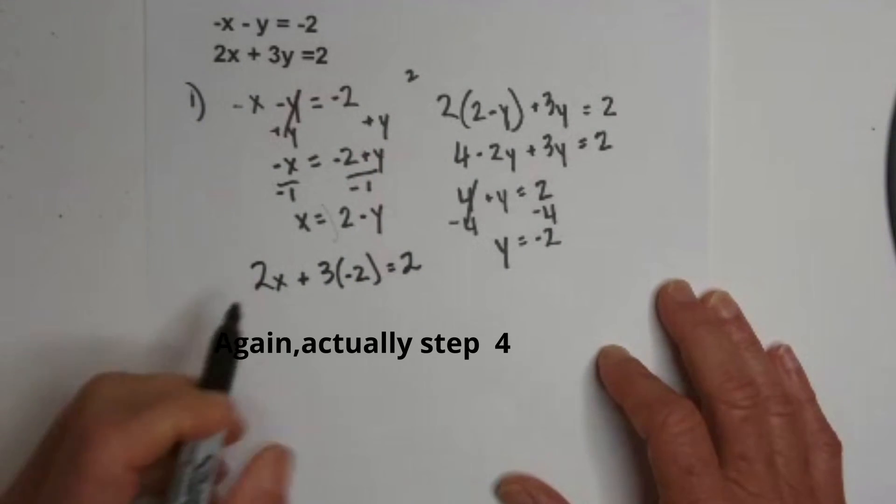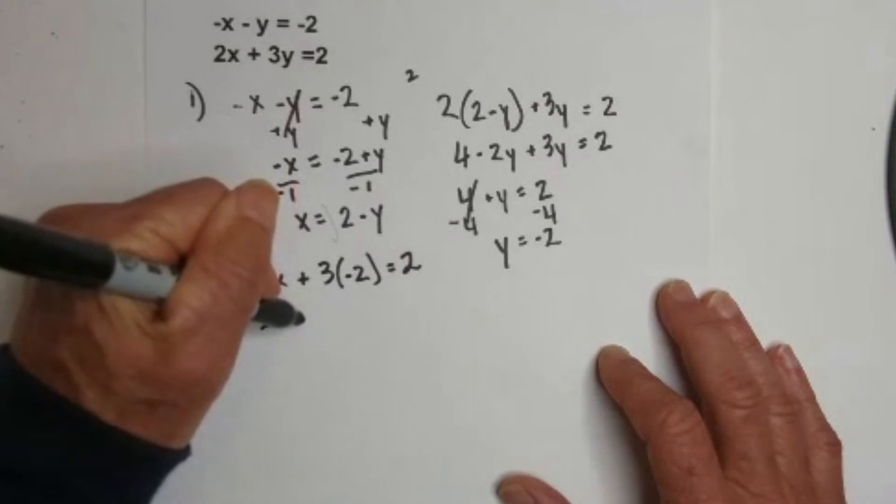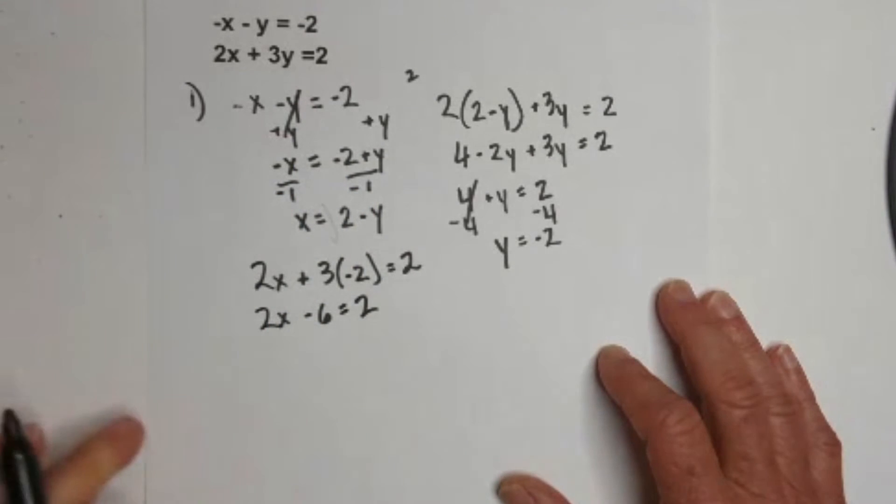Okay. So, I have 2x + 3 times y which is -2 equals 2. Okay. So, this would be like step 3. So, now we have 2x and a positive negative minus 6 = 2.